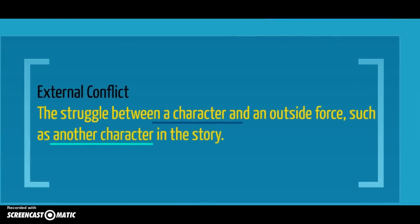On the other hand, we have external conflict. External conflict is the struggle between a character and an outside force. It could be another character in the story, or maybe the character versus their setting. So in the story Hatchet, the boy has to go up against the wilderness around him — that would be an example of external conflict.